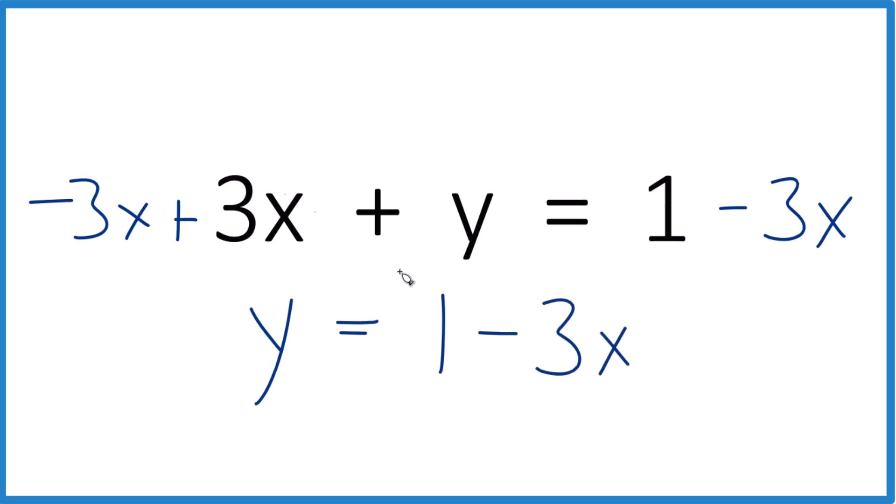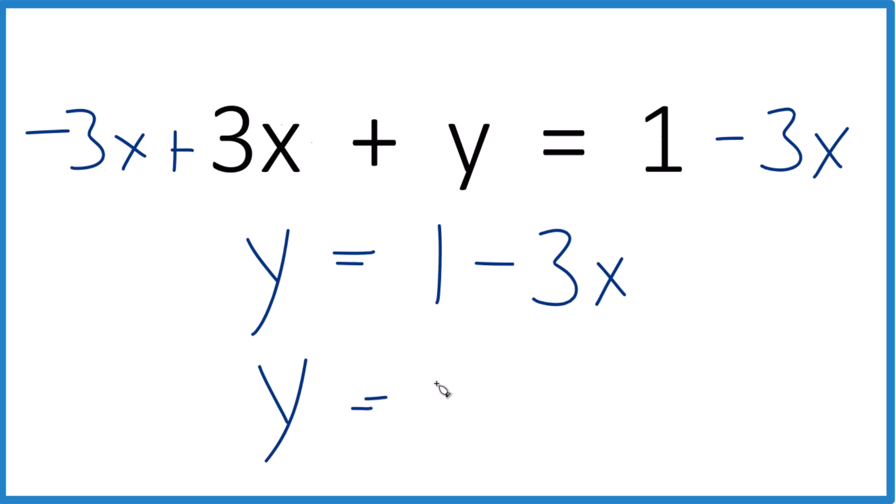I would probably write this as y equals negative 3x plus 1. That's in slope-intercept form, so if you wanted to graph this, that would make it a lot easier.